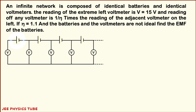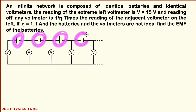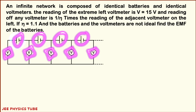So what this question says is that there are infinitely many identical batteries. These are the batteries I am talking about, and these batteries are non-ideal batteries, which means they must be having some internal resistance as well. Also, there are infinitely many identical voltmeters, and the readings of these voltmeters are in GP. The lower leftmost voltmeter has a reading of 15 volt, or V, and just to the right of that has a reading of the previous reading divided by eta.